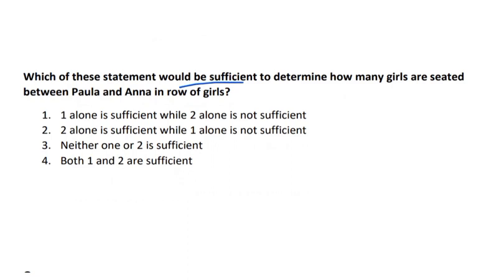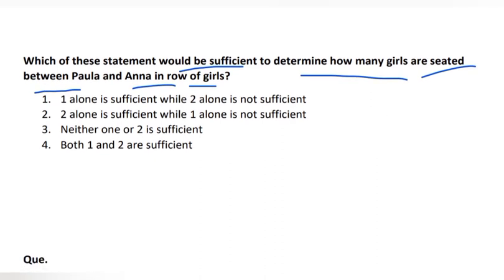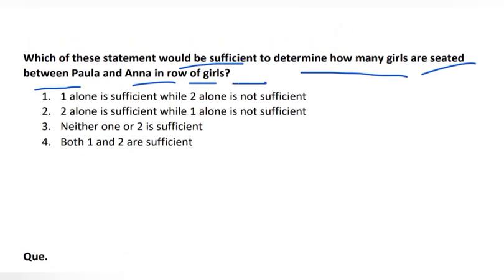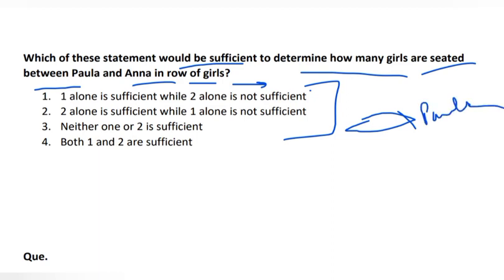Next question: which statement would be sufficient to determine how many girls are seated between Paula and Anna in a row of girls? Unfortunately, this question appears incomplete — the statements are missing from the screen. It seems our team forgot to include the statements. Please tell us in the comments with the video timestamp and we will cross-check. The question mentions statement 1 and statement 2, but they are not visible.